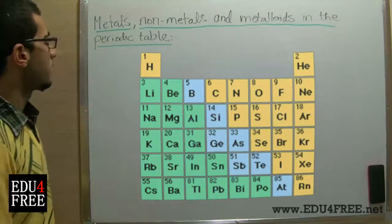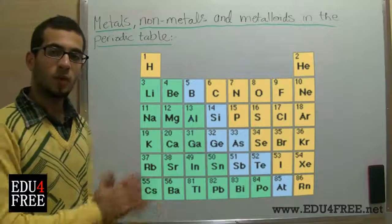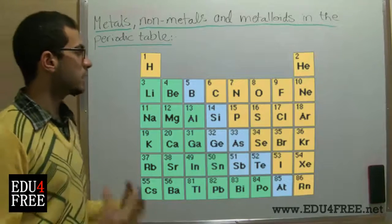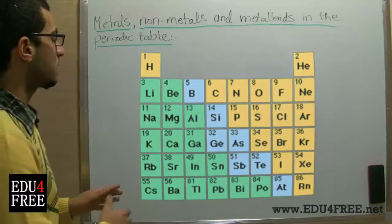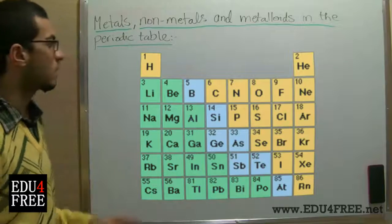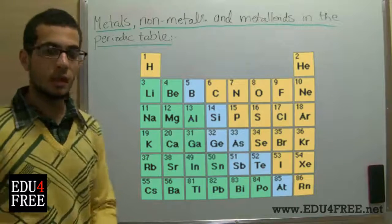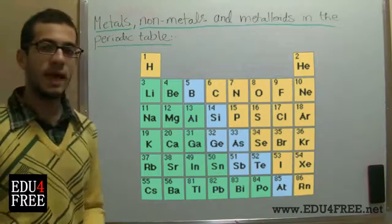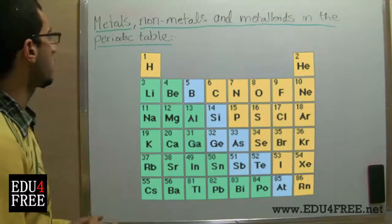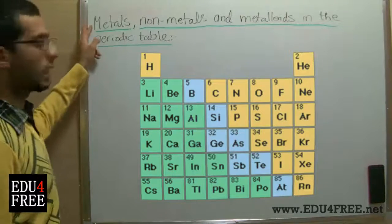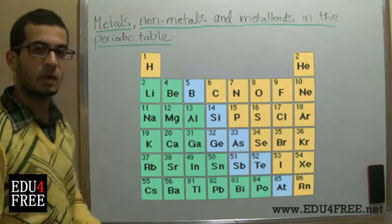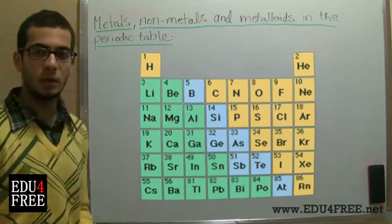We can see that metals are found before the nonmetals in horizontal periods. This illustrates the fact that as we move from left to right in the periodic table, the atomic radius decreases. So metals always have a higher atomic radius than nonmetals, and this is why the ionization potential and electron affinity of metals is less than that of nonmetals.